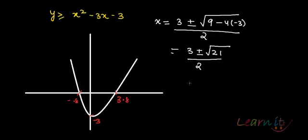Essentially what we have is 3/2, so 1.5, and √21 is approximately 4.6, giving us 1.5 plus or minus about 2.3.